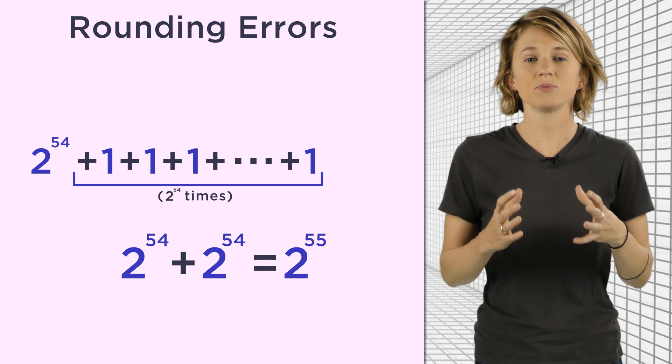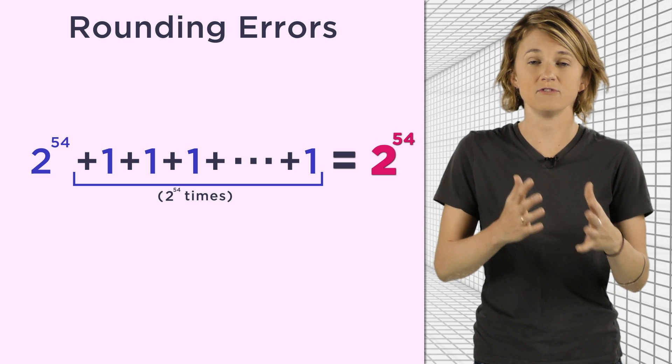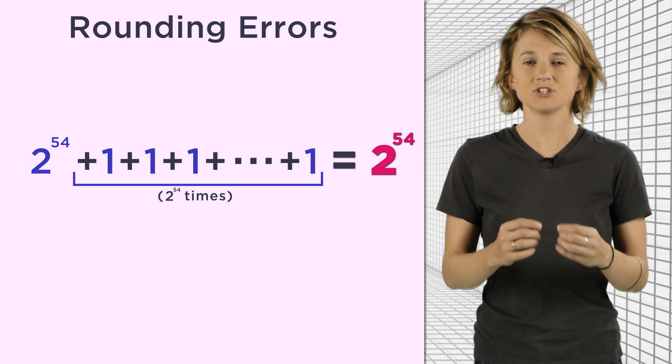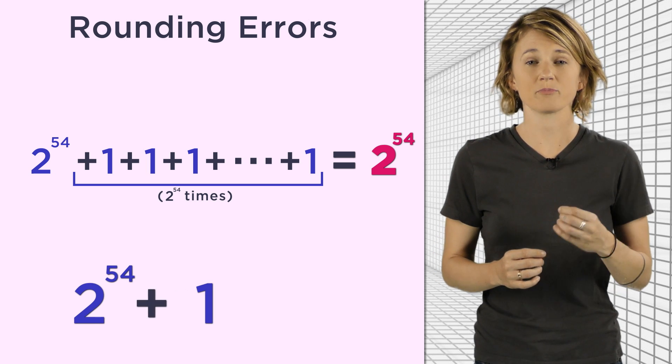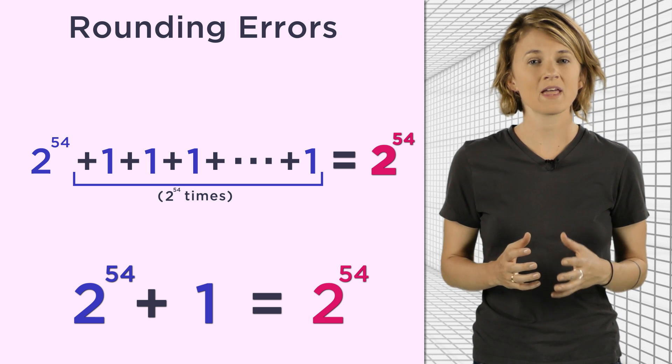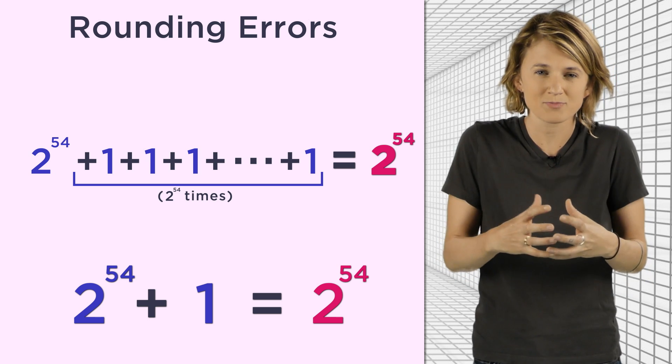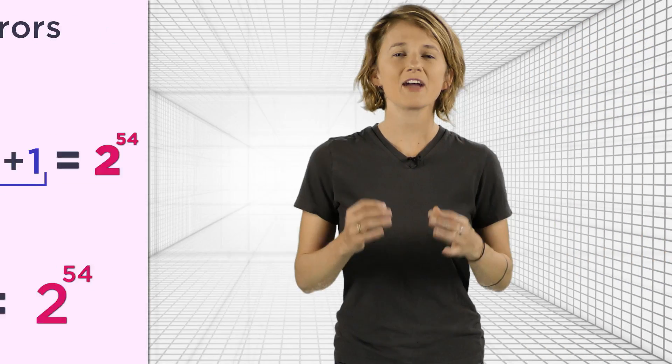But if the computer were just to add the terms one by one, it would get 2 to the 54th. That's because each time we add 2 to the 54th plus 1, it just rounds down to 2 to the 54th. And that just happens over and over and over again. All the ones get consumed by the rounding error. Errors like these can make arithmetic with floating point numbers seem weird. But it becomes a lot less weird when you remember that a computer is working with a restricted number of binary significant digits.